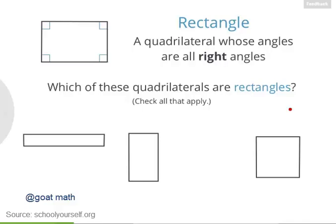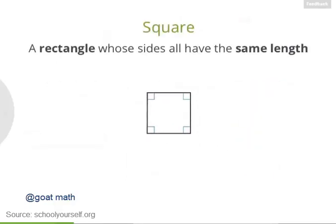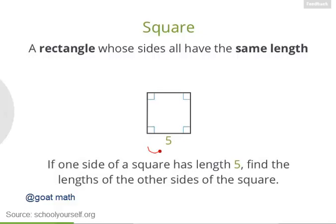Next, let's take a closer look at this rectangle over here. This is an example of a square, which is a special kind of rectangle. A square is a rectangle whose sides all have the same length. So if I were to tell you that this bottom side of the square has length 5, what are the lengths of the other sides?